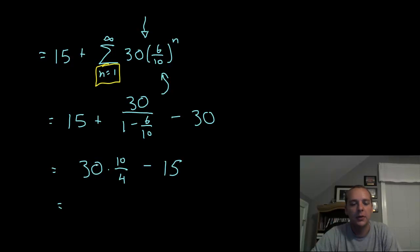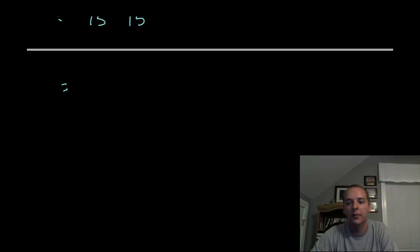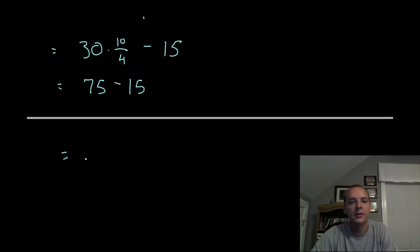A little bit of algebra left: thirty divided by four is the same as fifteen over two. Fifteen over two reduces no further, but as a decimal that's seven point five. Seven point five times ten is seventy-five, and seventy-five minus fifteen gives us sixty.